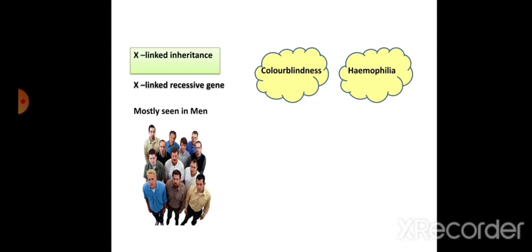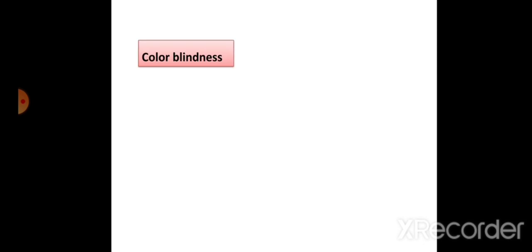X-linked diseases are mostly seen in men because females are homogametic (XX) while males are heterogametic and have only one X chromosome. If that single X chromosome carries a disease gene, the male will get the disease. A female with the gene on only one X chromosome becomes a carrier; to be diseased she must carry the gene on both X chromosomes.